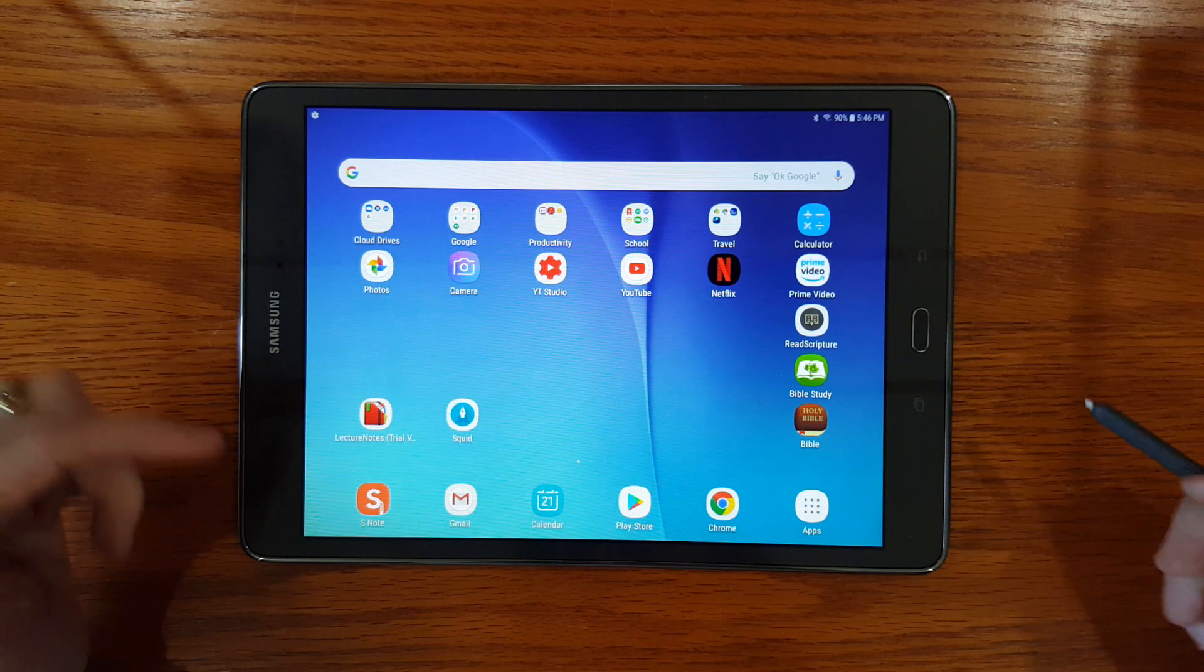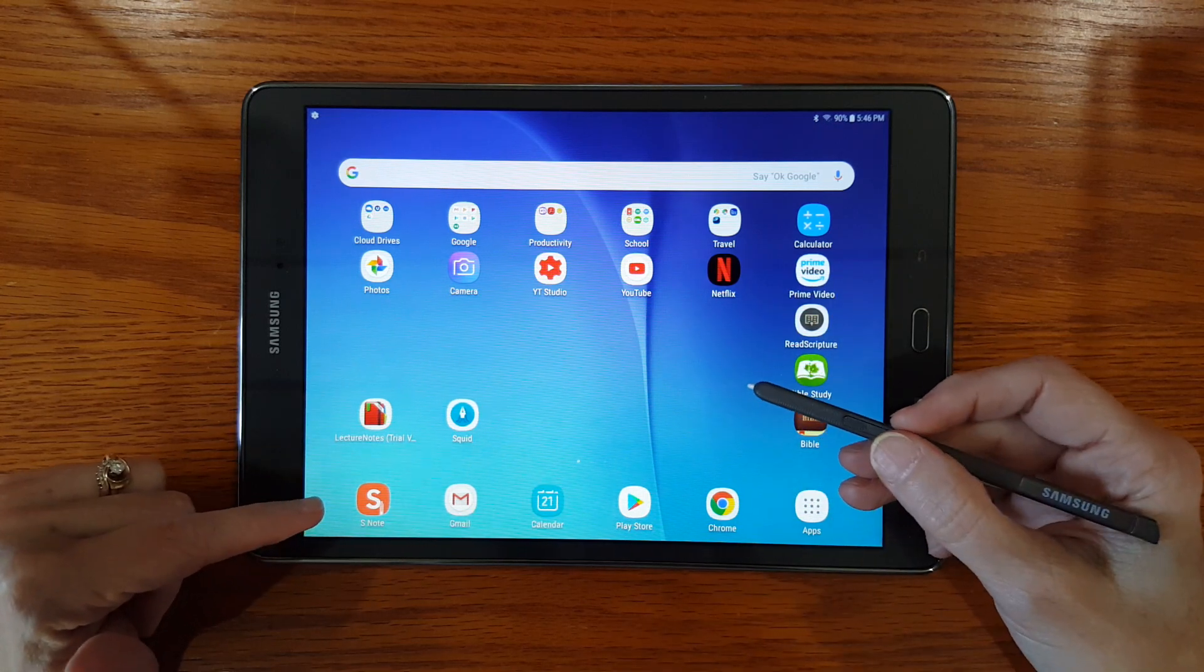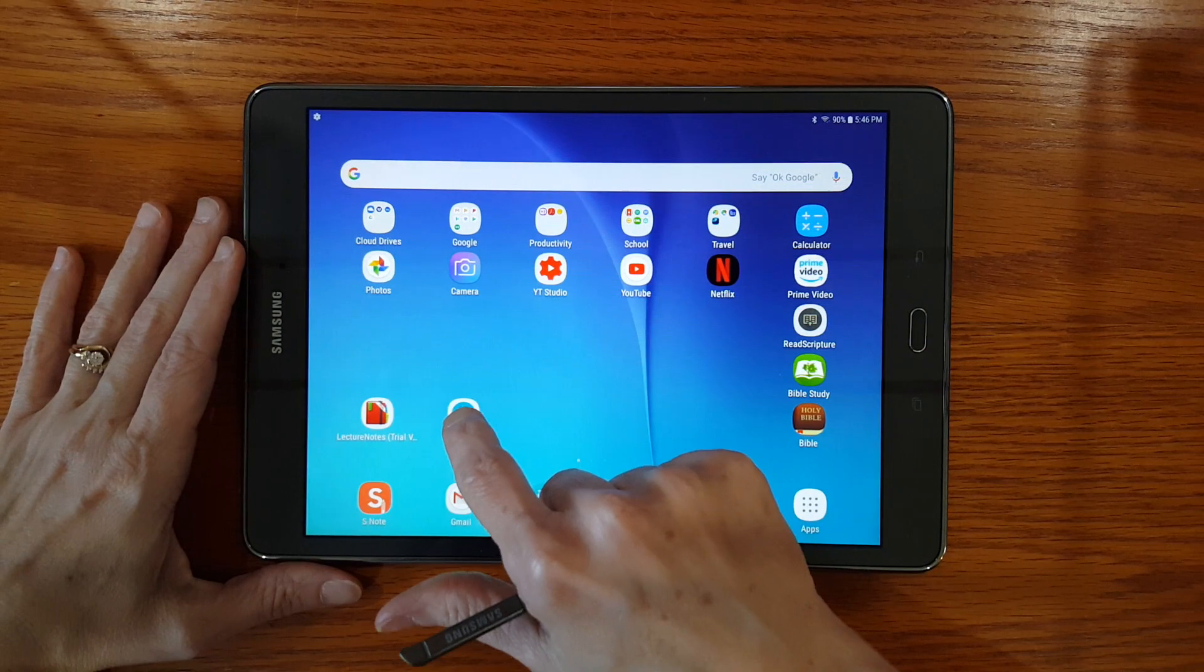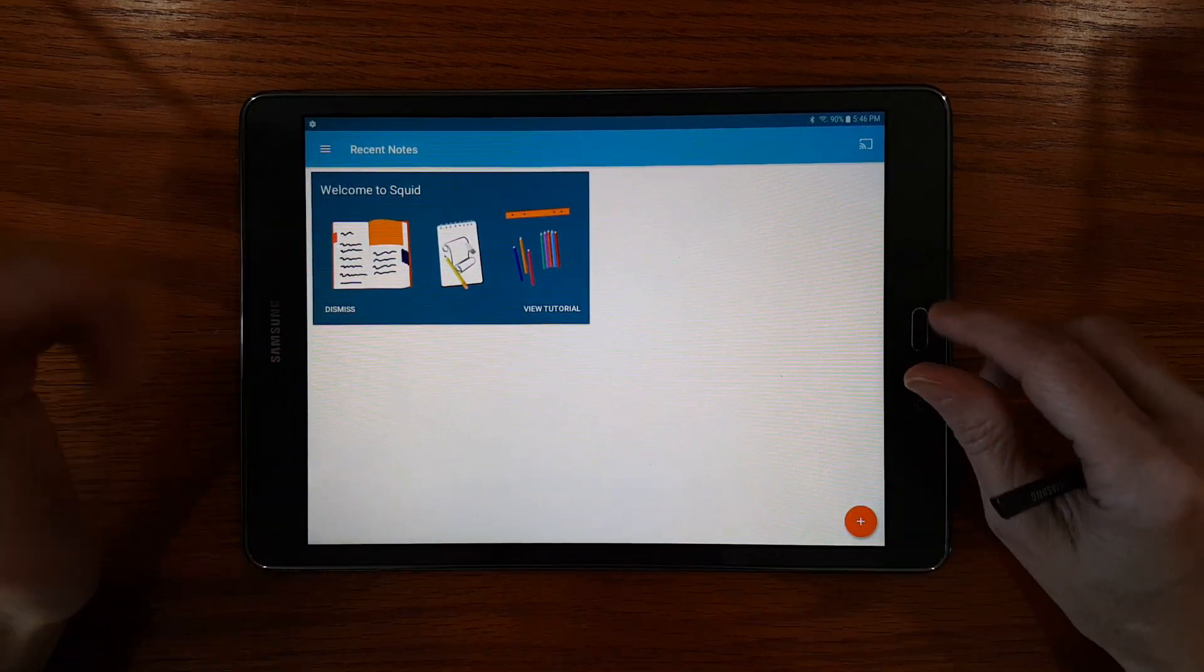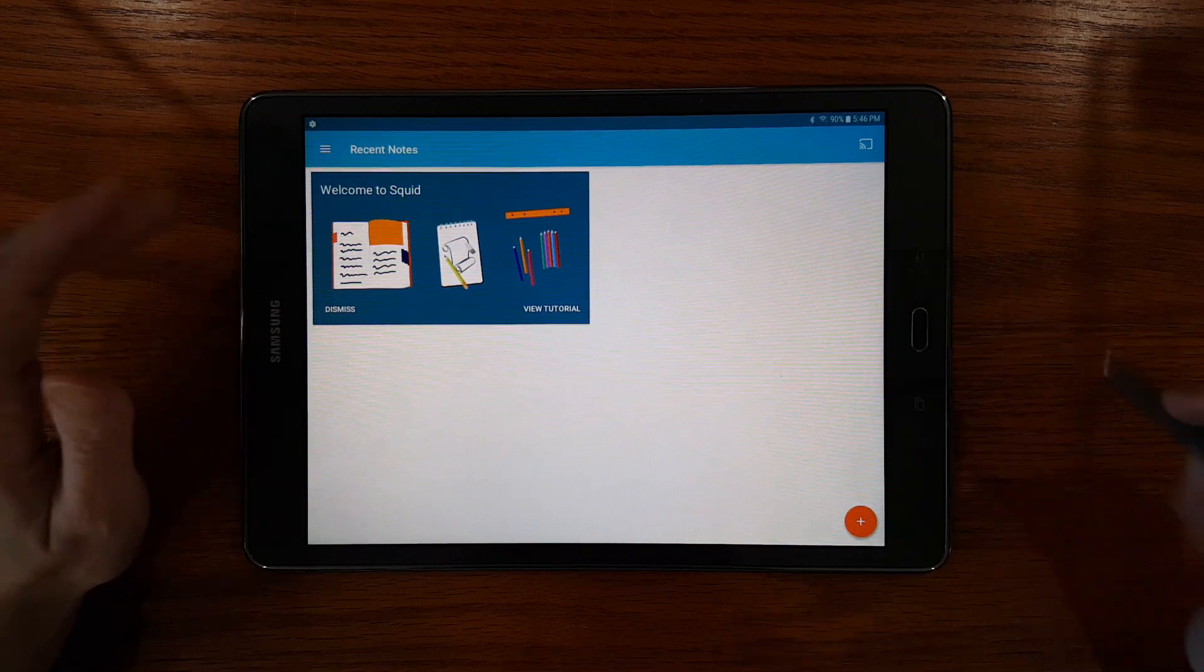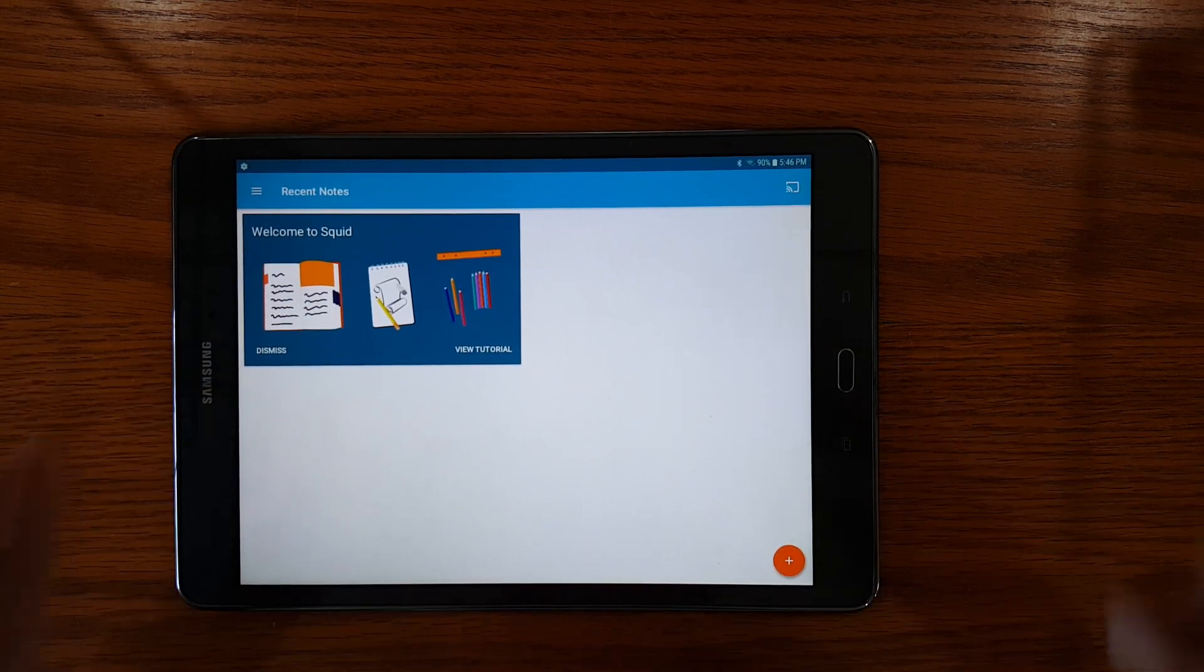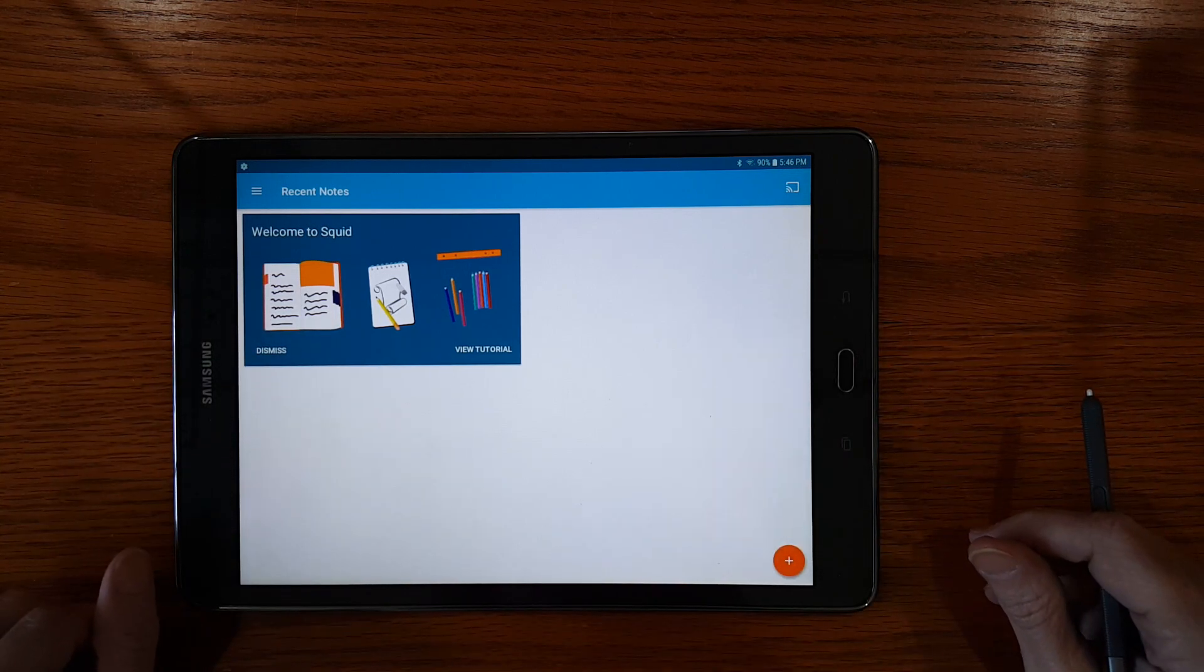So far in previous videos I've taken a look at S Note which is a note-taking app designed specifically for the Galaxy devices that include an S Pen. I've made a video about lecture notes and Squid that I'm going to take a look at today. First impressions are it's a more polished user interface similar to S Note and the first thing that jumped out at me is the cast feature that you can cast this to a smart TV or a Chromecast. I'm going to demonstrate that here today. It's got a nice tutorial that I went through you can dismiss and get off your home screen when you're done with it.